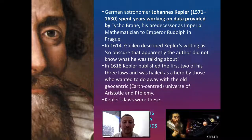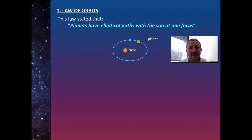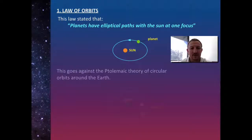The three laws that were put forward were the law of orbits, the law of areas, and the law of periods. The first law of orbit states that planets have elliptical paths with the sun at one focus. Here you can see the sun and the planet, but instead of being in the center, the sun is off to one side.